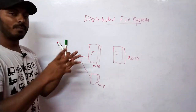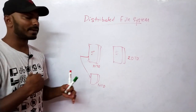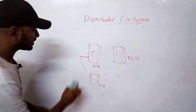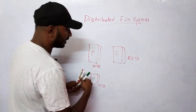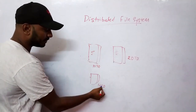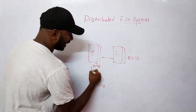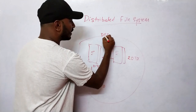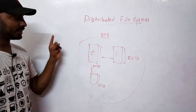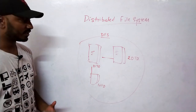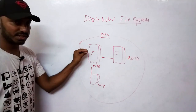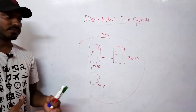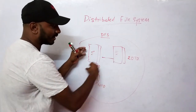Distributed file systems are designed to work across machines. They understand the storage availability across all machines in a cluster, effectively creating one big virtual hard disk. For example, consider a cluster with three machines — say 10 TB, 20 TB, and more — all interconnected. If I have a file of about 35 TB, how do I store it?